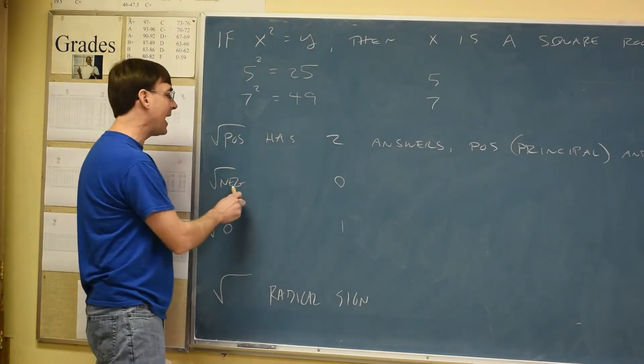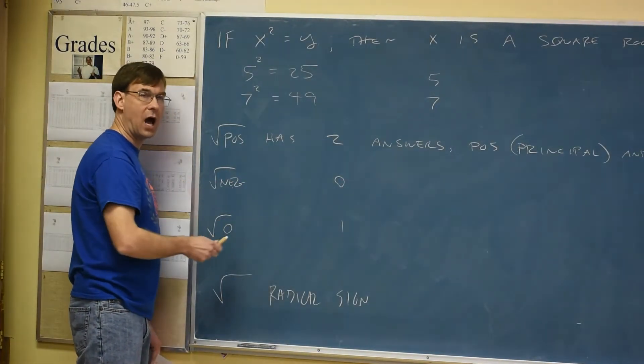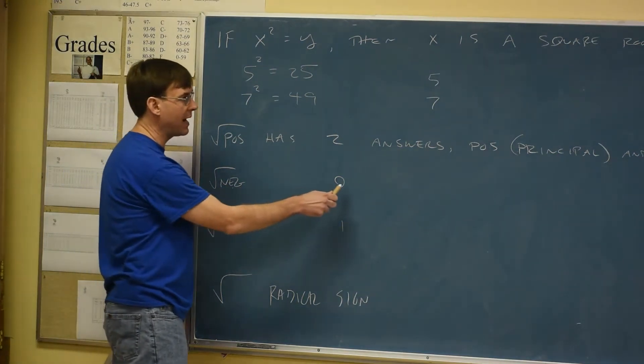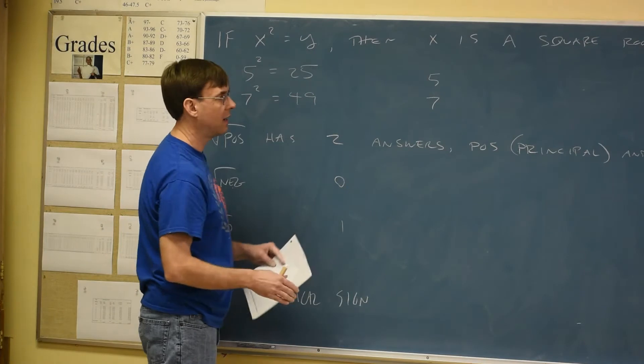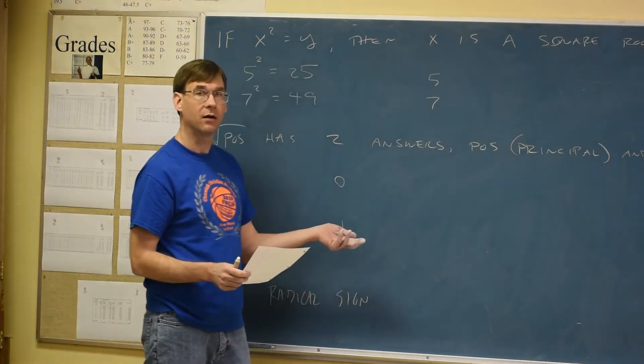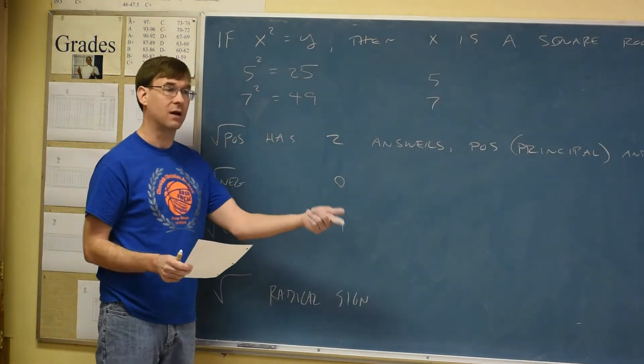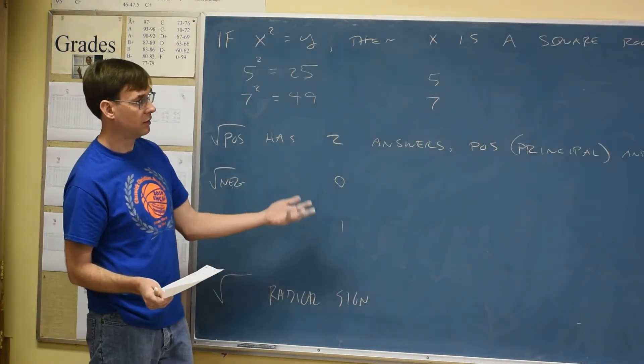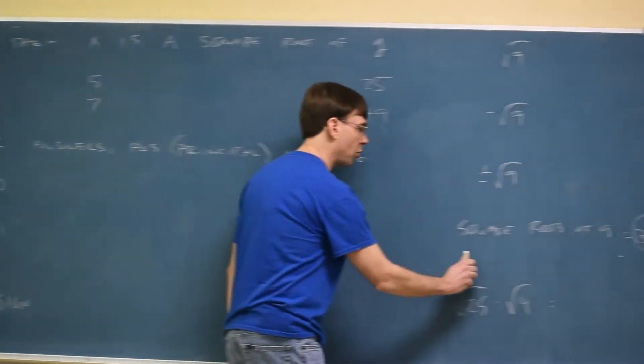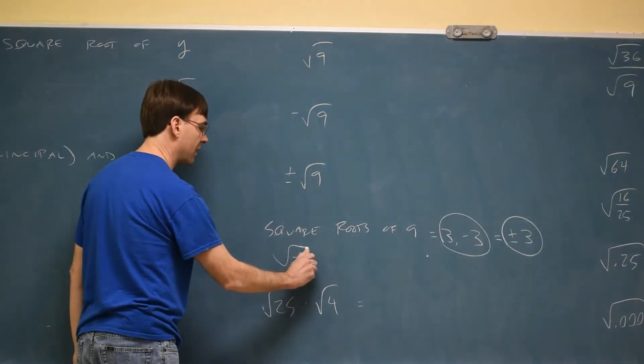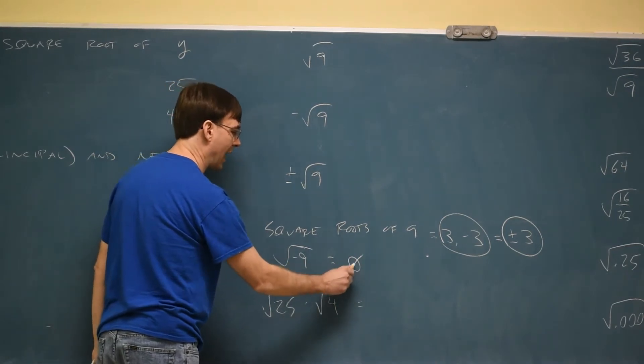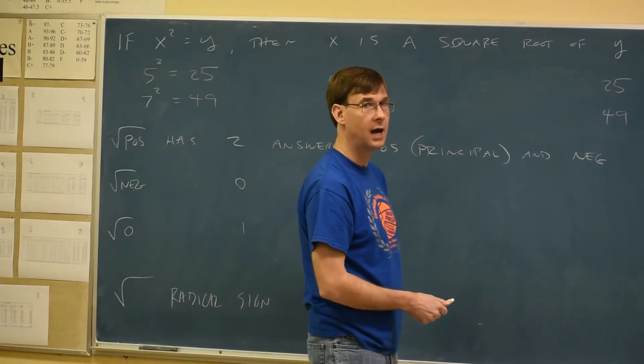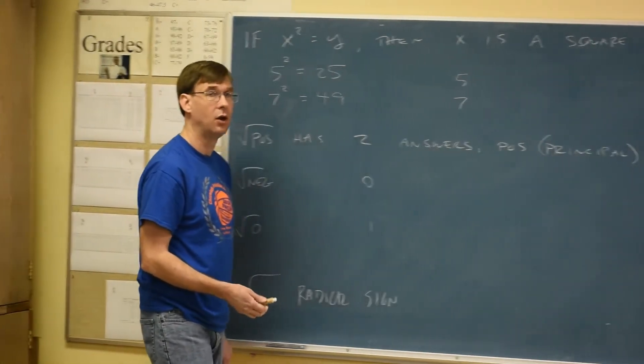Square roots of negatives have no answers for now. Not until algebra 2, chapter 7. But square root of negative, for right now, there is no way to do that, because nothing times itself can make a negative. If you try to do a negative times a negative, it's positive. Positive times positive. It is positive. So if I threw you a problem like the square root of negative 9, for now, you would have to say I cannot do that and use the old impossible empty set kind of abbreviation on that. It cannot be done for us, not now.